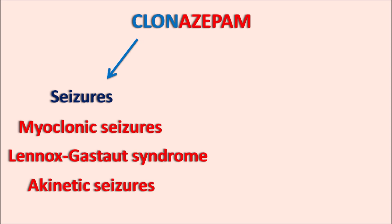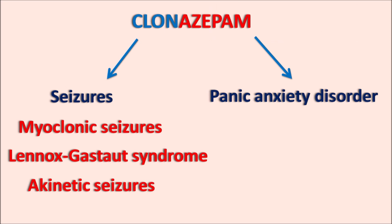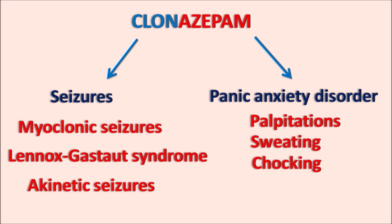Being a benzodiazepine, Clonazepam can also be used for anxiety, and particularly it is indicated for panic anxiety disorder. This is an anxiety state where panic conditions can be observed in patients. For instance, the patient may have palpitations, awareness of heartbeat, sweating, choking, chest pain, and tremors, along with symptoms of fear and tension. In such panic anxiety disorder, Clonazepam can be used.